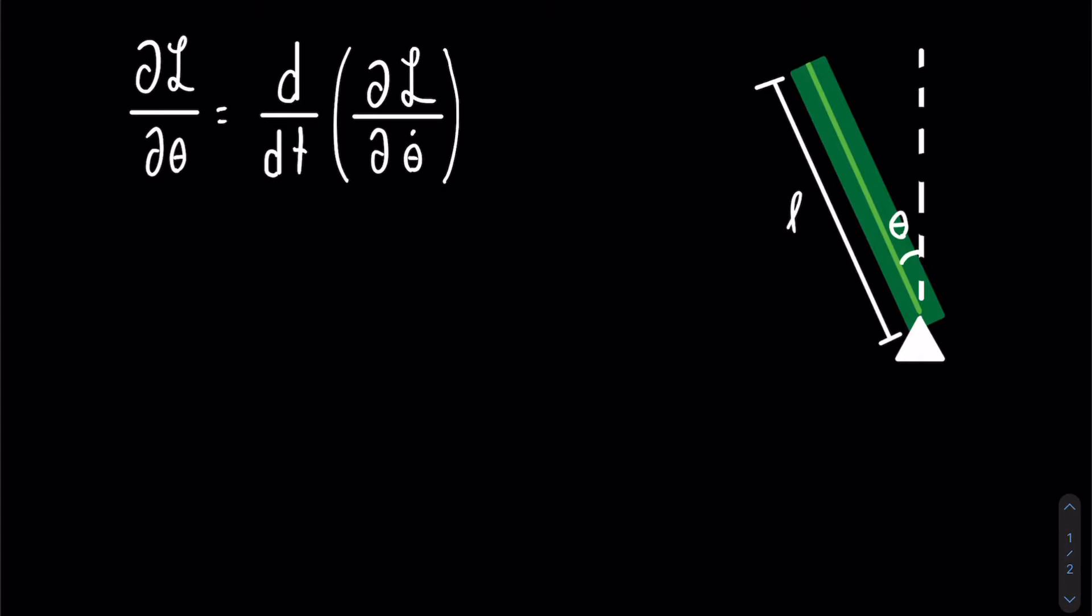We have the equation that we will be using on the top left and the diagram of the stick falling on the right. As you can see, it is attached at its end by a pin joint, and we will be using the angle from the vertical to represent its motion, and the stick has a length L.